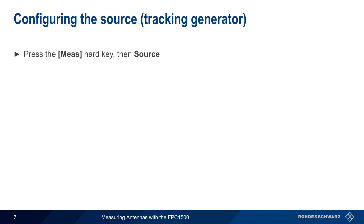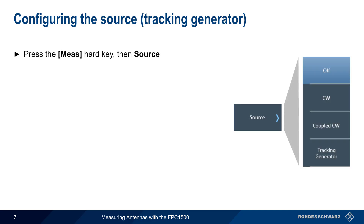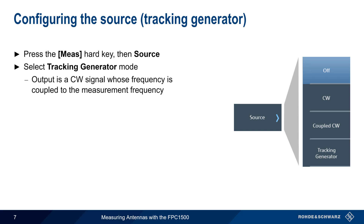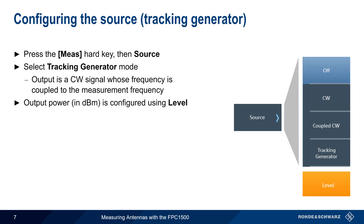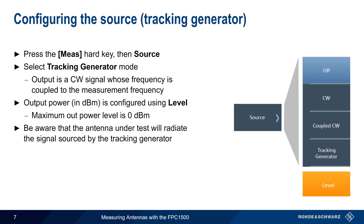Next, we need to configure the FPC's tracking generator, and this is done by pressing the Measure hard key and then Source. For antenna measurements, we want tracking generator mode, in which the output of the generator is a CW signal whose frequency is coupled to the measurement frequency — that is, the source output frequency sweeps at the same rate as the measurement. The output power of the generator is also configurable in units of dBm using the Level key, with the maximum output power level being 0 dBm. One important thing to keep in mind is that the antenna under test will radiate the signal sourced by the tracking generator, and this test signal could potentially create over-the-air interference to other systems using frequencies within the generator sweep range.